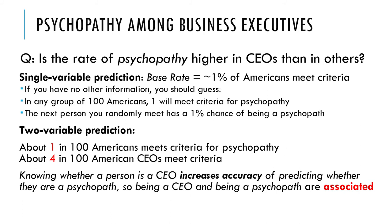Knowing whether a person is a CEO increases the accuracy of your prediction of whether they're a psychopath. If someone says, you think this guy's a psychopath — you can say, that depends, is he a CEO? And if so, there's a 4% chance. So you can increase your accuracy of predicting one variable if you know the status of the other. Those two variables are associated because you get an increase in accuracy.